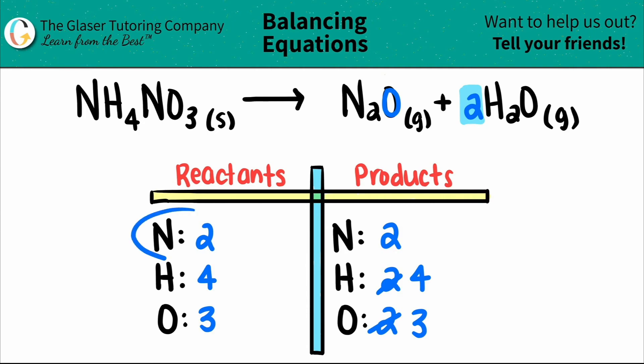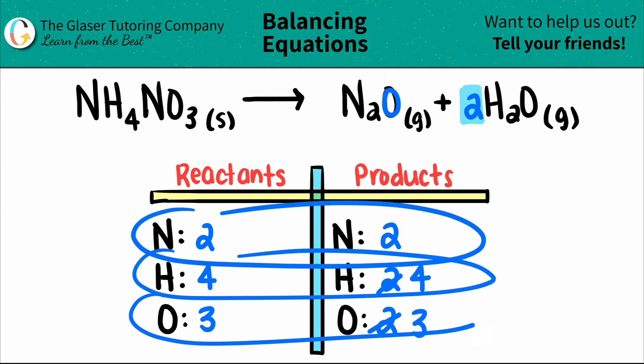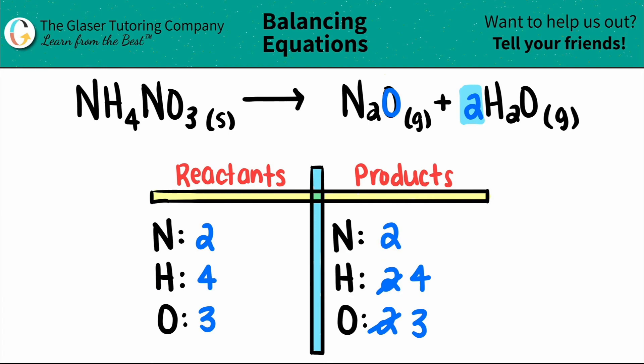And look at that, guys. Every one of them is balanced. So we're done. So by balancing the hydrogen, we secretly balance the oxygen. So the balanced equation is one NH4NO3(s), which will break down into one N2O(s) plus two H2O(s). And that's it.